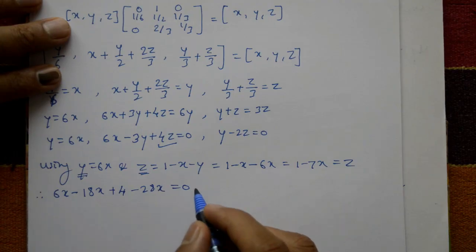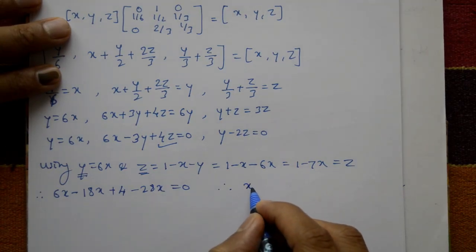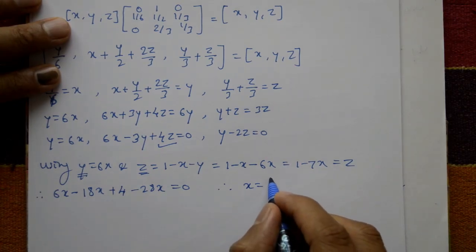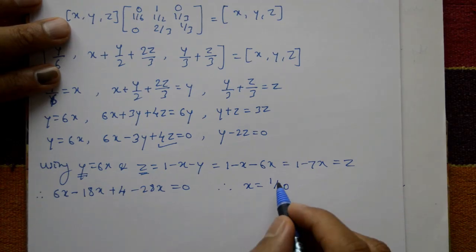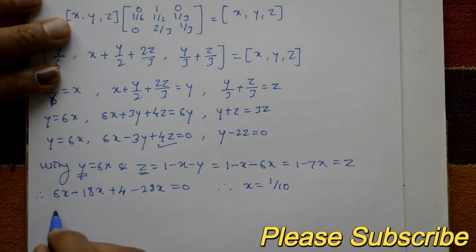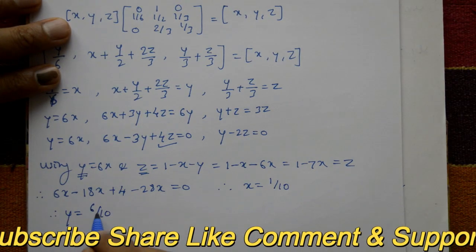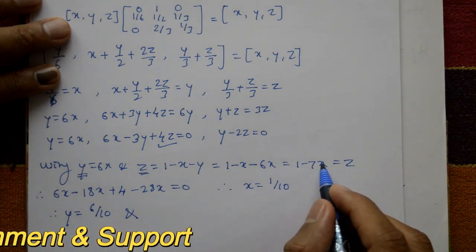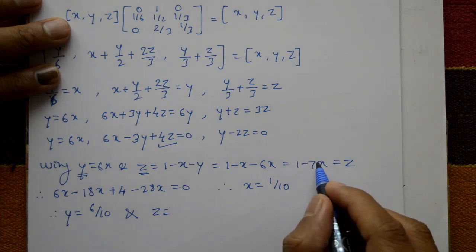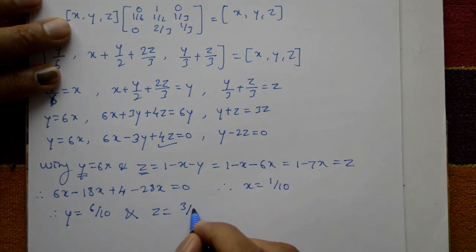Simplifying, we get 4 minus 40x = 0, so x = 1/10 or 0.1. Therefore y = 6x = 6/10. And z = 1 minus 7x = 1 minus 7/10 = 3/10. So the values are x = 1/10, y = 6/10, z = 3/10.